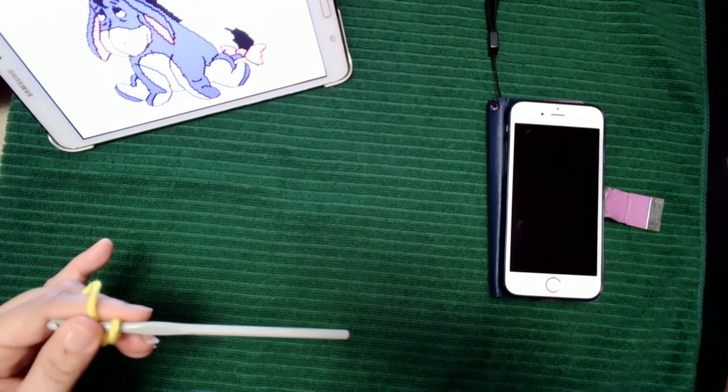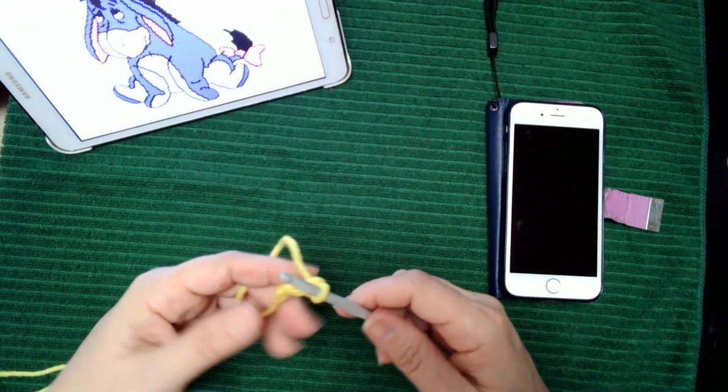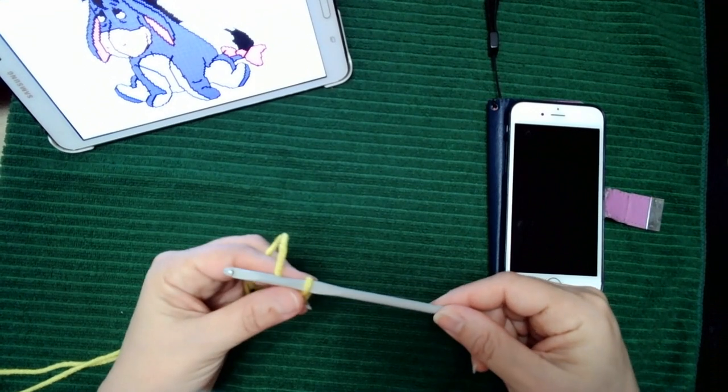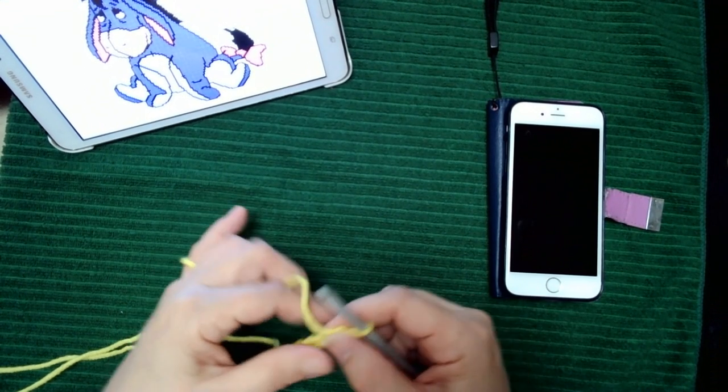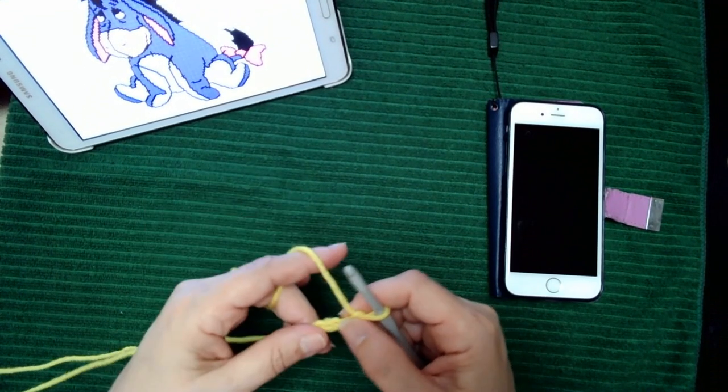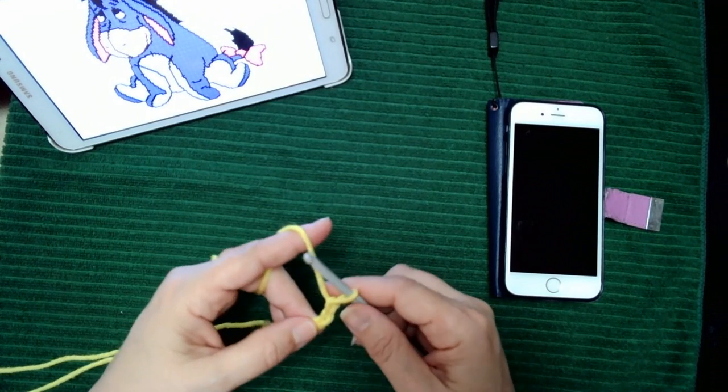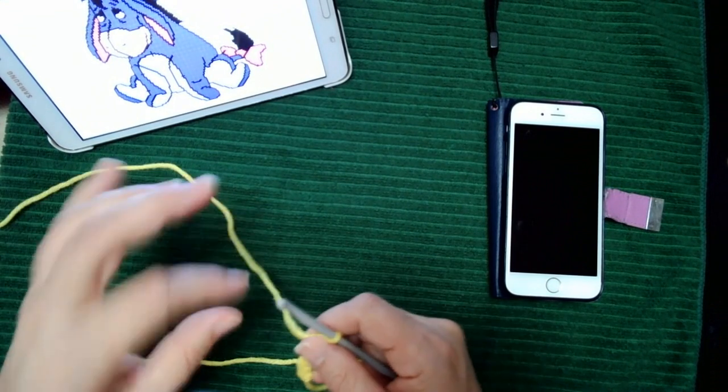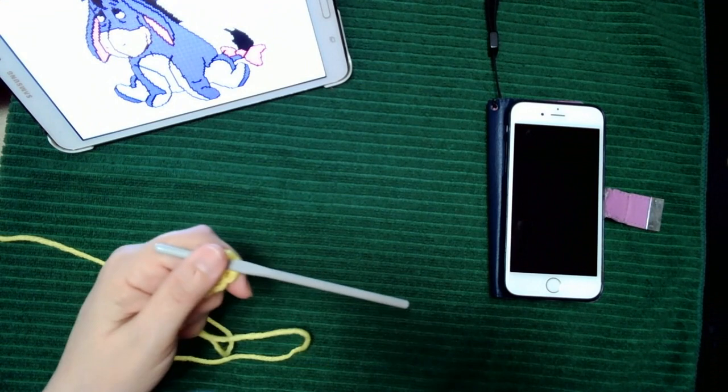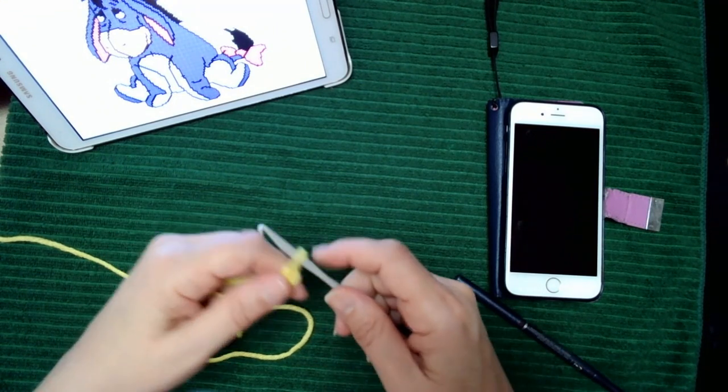So to do this, what you need is your hook that you're going to use in your project, the actual yarn that you're going to use. You're just going to be making a small sample so it's not going to use up a lot, and you need a marker to mark down exactly where we need to at that point.